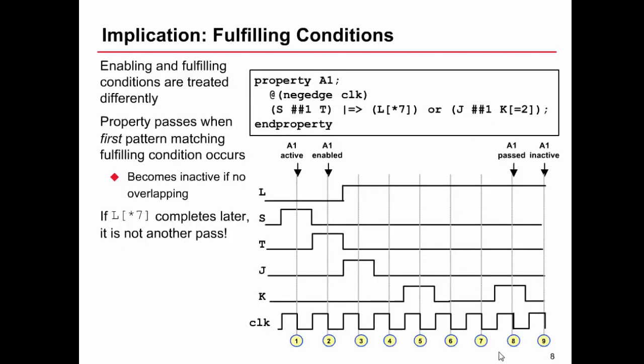We will now discuss how fulfilling conditions and enabling conditions are treated differently by the assertion language. So what we have an example of here is a property where the enabling sequence is s followed one cycle later by t. And if we observe that sequence, then what this implies from the next cycle is that we see one of the two alternative sequences shown, which is seven consecutive repetitions of l or we see the sequence j followed one cycle later by two non consecutive repetitions of k.